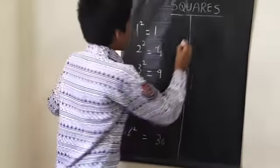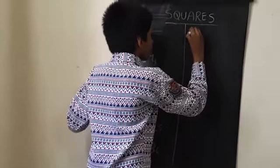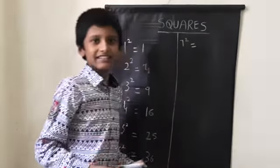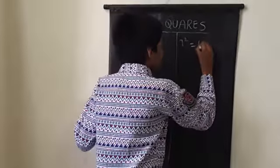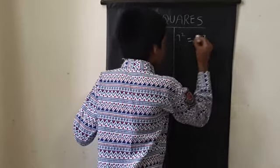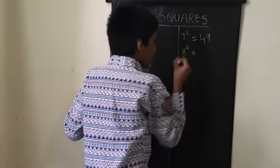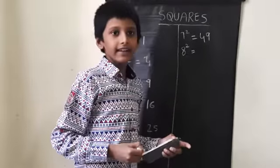Seven square: seven times seven is forty-nine. Eight square: eight into eight is sixty-four.